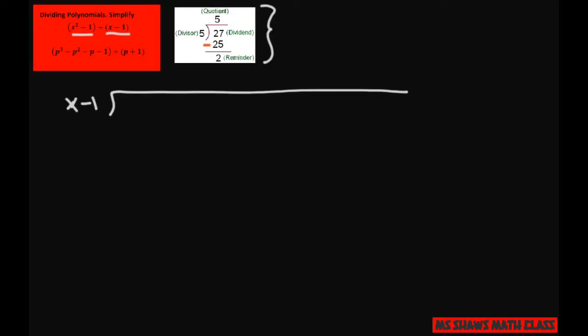I'm going to use placeholders, so I'm going to write x to the fifth plus 0x to the fourth plus 0x cubed plus 0x squared plus 0x minus 1. This is because when you subtract or add like terms, you have to have the same terms — we'll see this in a minute.